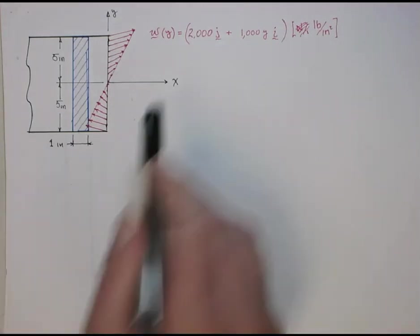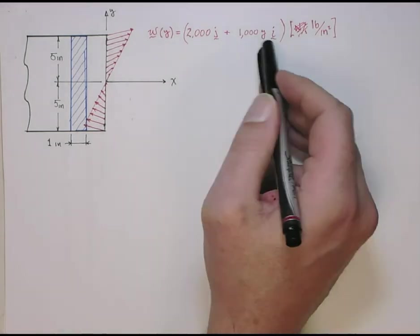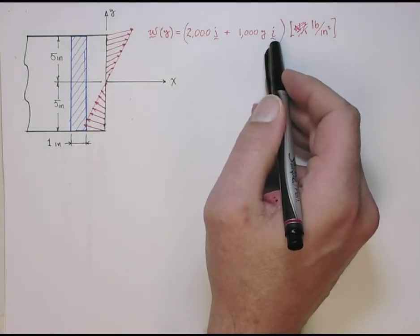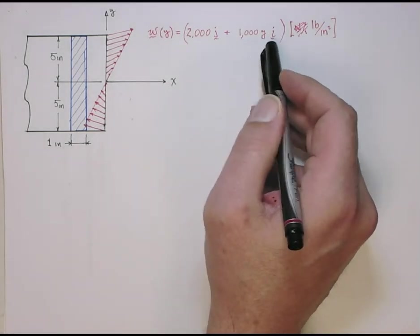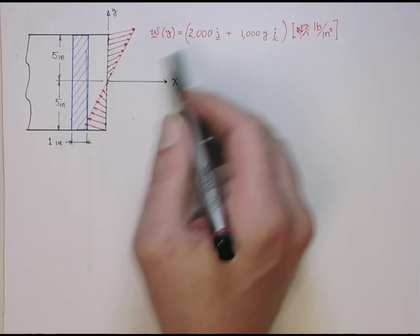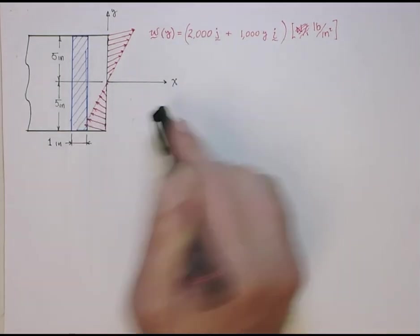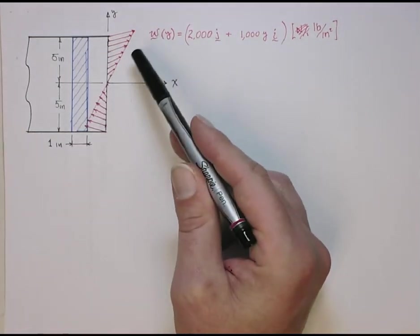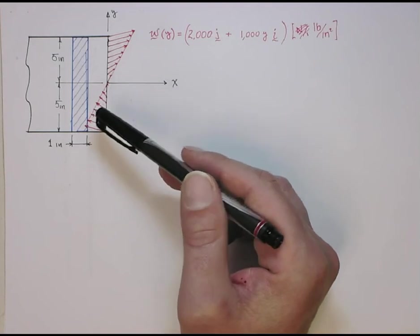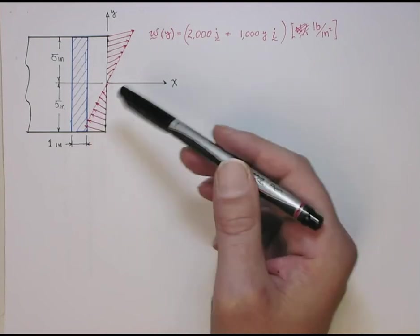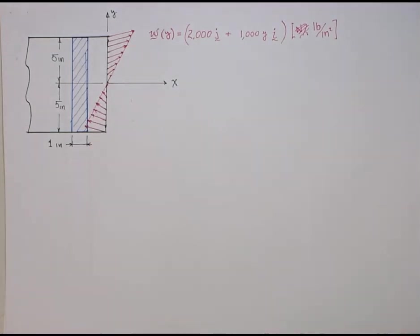So it's a distributed force, force over the area. And you can see here, it has an x component that is a function of y, so the x component changes, and then a constant component of the y. And I tried to draw the distribution kind of to scale, so you can see the nature of it. And here are the local x and y axis.